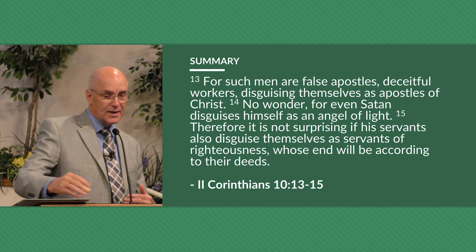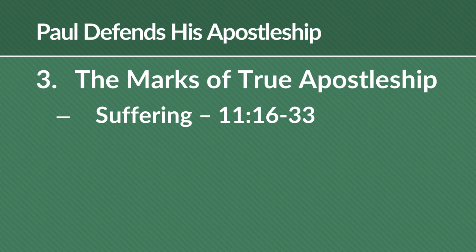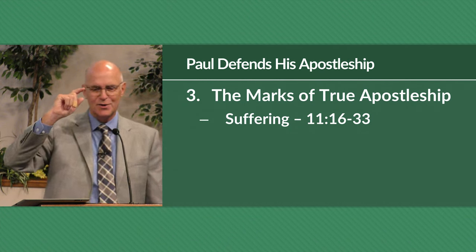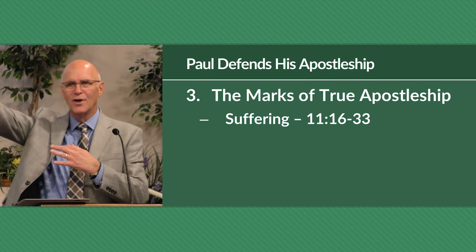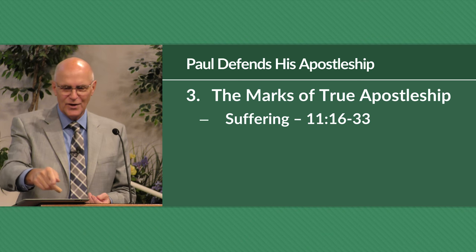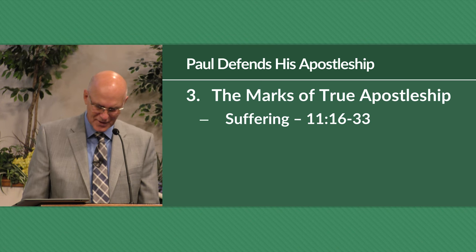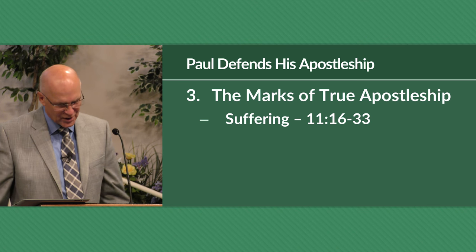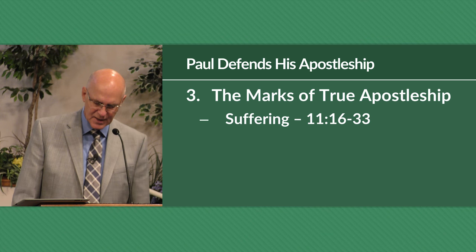Now Paul moves on to the marks of true apostleship. He's shown the false teachers and how they work. What about a true apostle? He starts with suffering — not credentials from a good university, but suffering. That's the mark of a true apostle. Verses 16–23. He's done this before in chapter 4, but this time he goes into detail about the things he has suffered because he's an apostle.